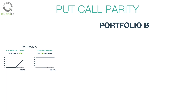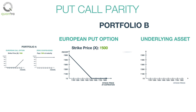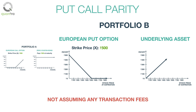Portfolio B consists of a European put option having the same strike price and expiry date as the call option, and the stock of the underlying asset, the same underlying as the call option. Here we are not assuming any transaction fees.